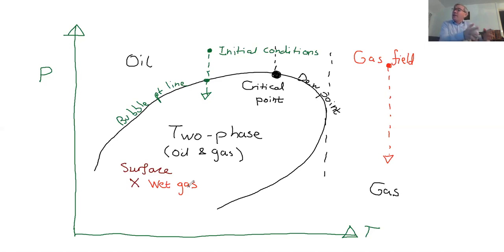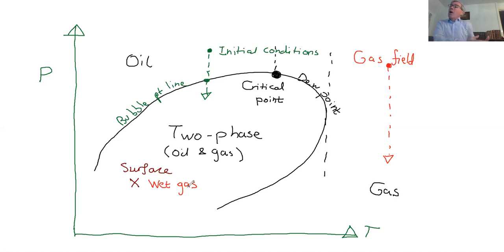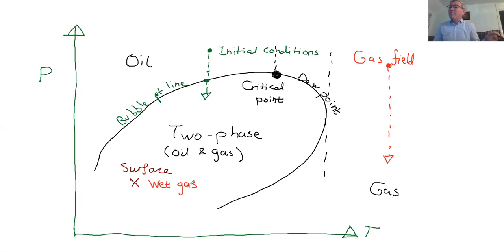An analogy: in the United States, a 'wet bar' doesn't mean water was spilled — it means the bar serves the liquid of interest, which is alcohol. A dry bar will not serve alcohol. Similarly, a wet gas produces the liquid of interest — oil — while a dry gas does not produce any liquid at the surface.